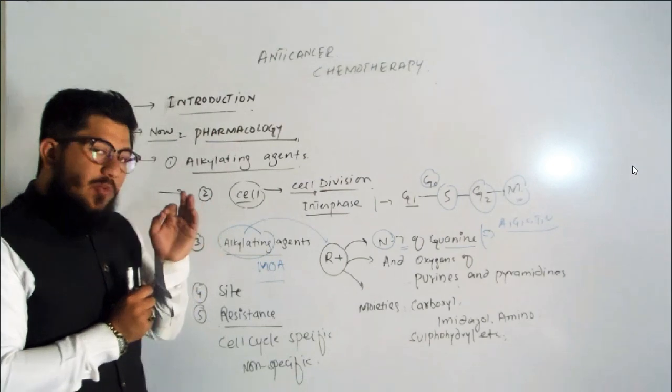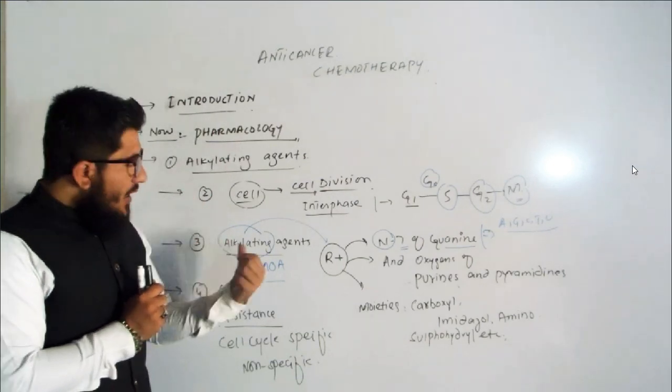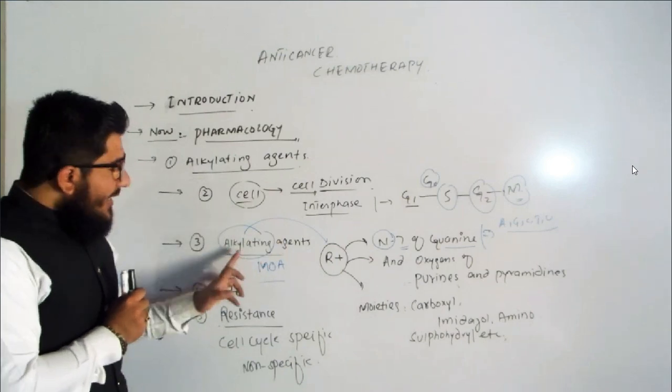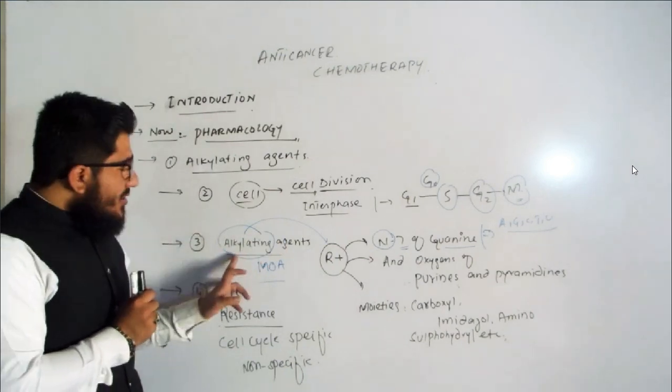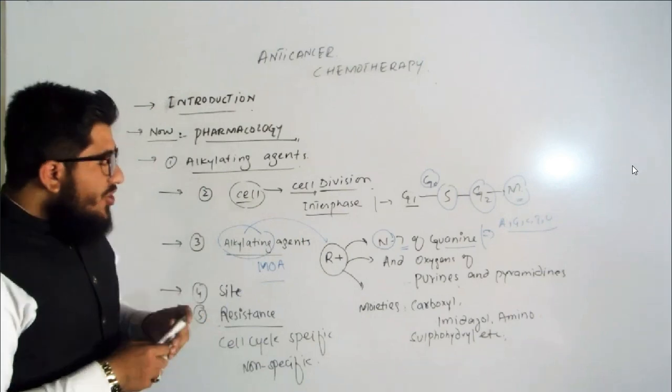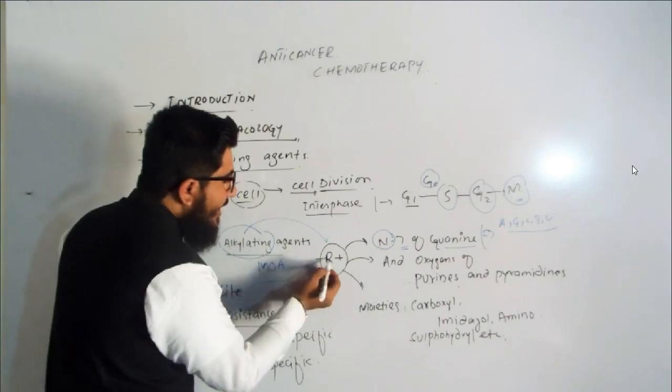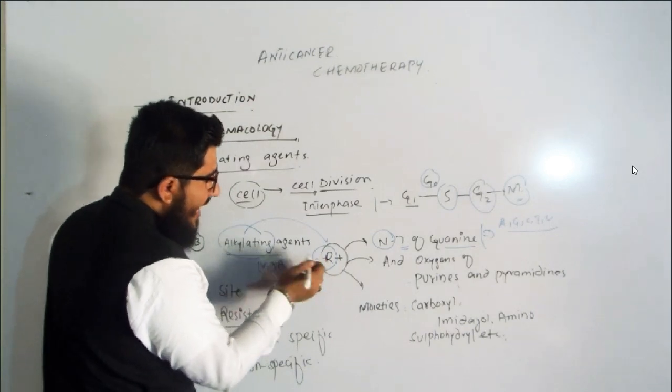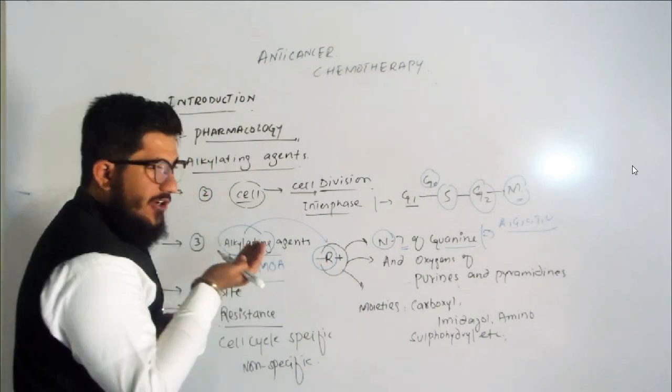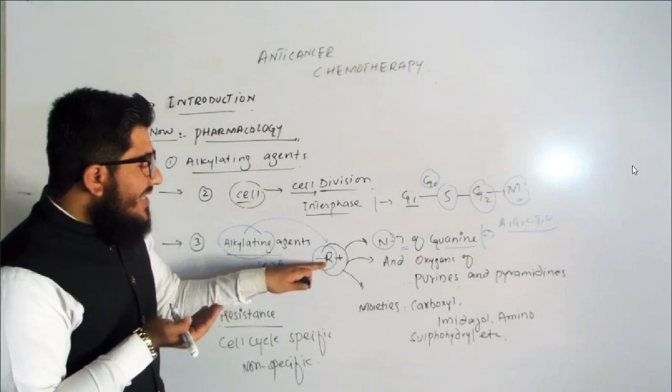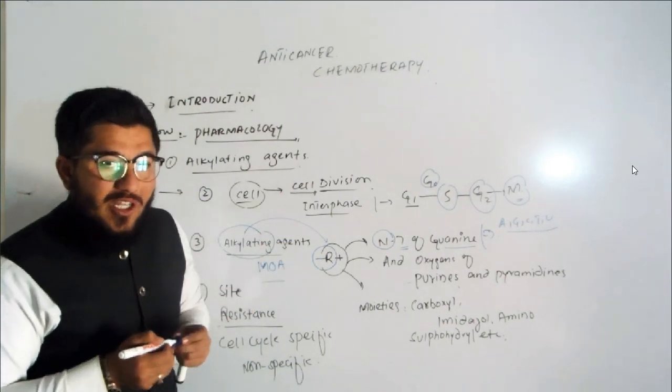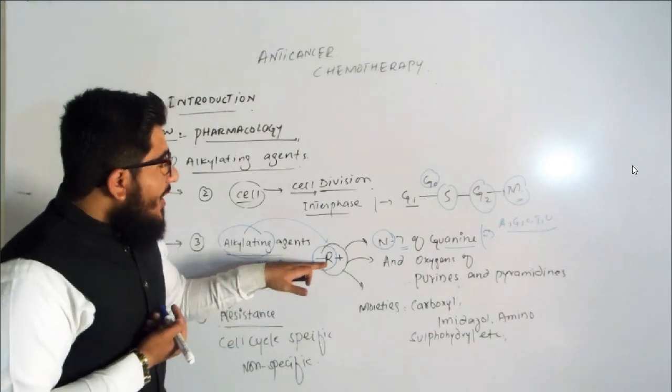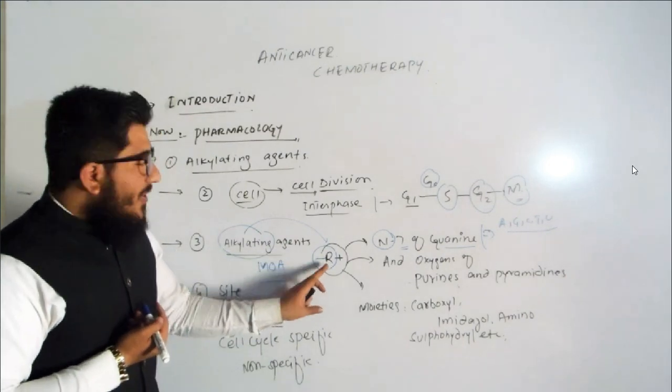First of all, look at the word 'alkylating agents.' Alkylating itself indicates that it is doing alkylation. What is alkylation? Alkylation is actually the addition of an alkyl group. This is the symbol of alkyl, that is R. And when you add a slight dash in front of this, it is now an alkyl radical. You might have some knowledge about chemistry. If you don't, just watch my video.